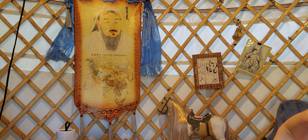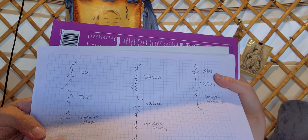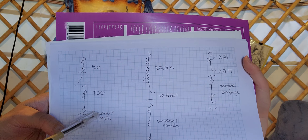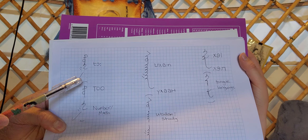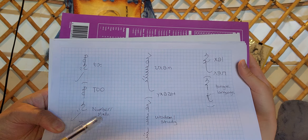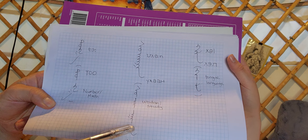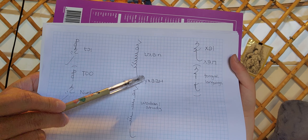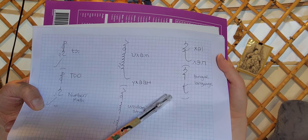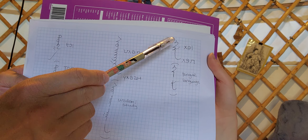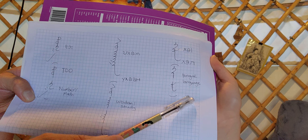This one is numbers or mathematical — it's numbers or math. The meaning is wisdom or study. This one is languages — the meaning is languages.